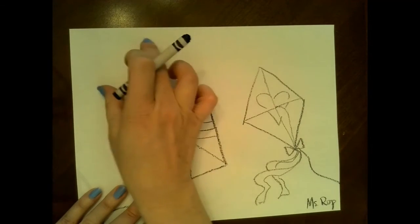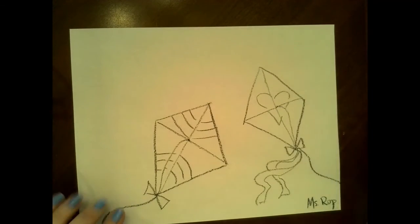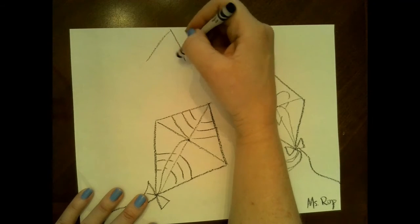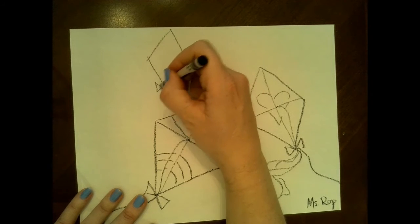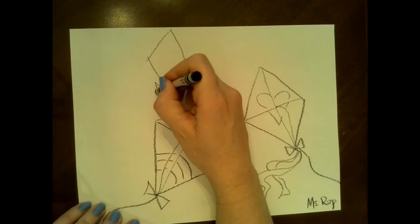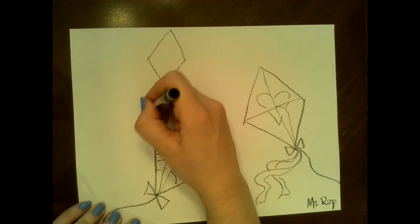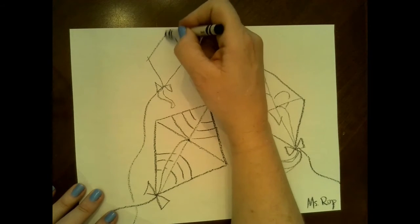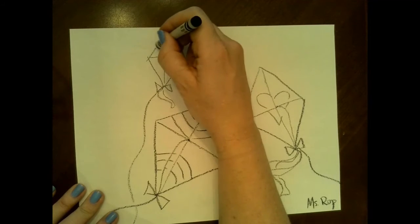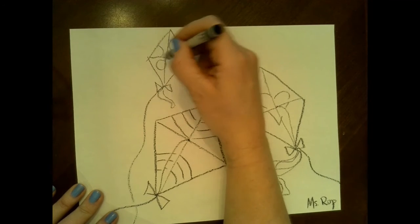Now let's pretend there's some kites flying way off in the distance. Those would be smaller and up here. So I'm going to do a smaller triangle with a tail. And then the line of the kite might be coming way down here. The crossbar and again the design. I think this one's going to have some neat circles on it.